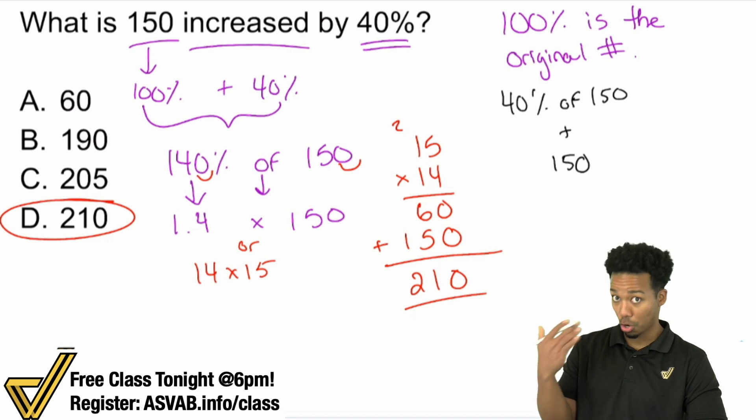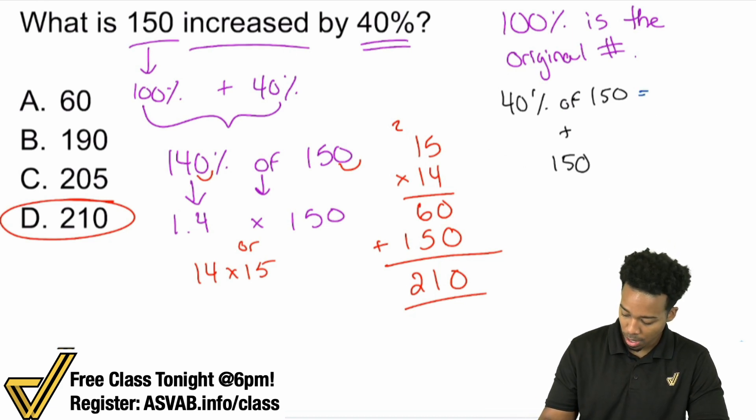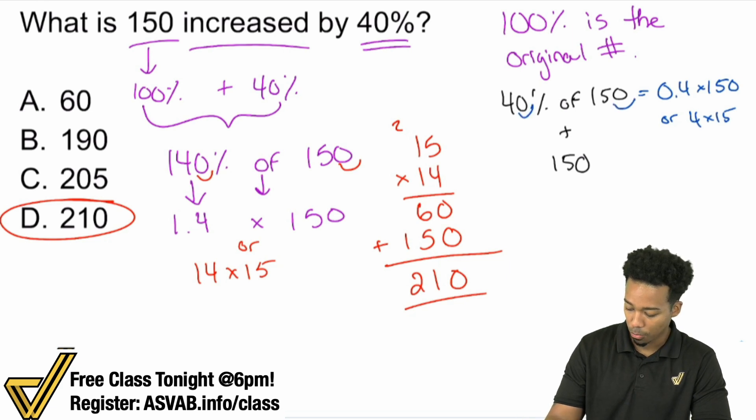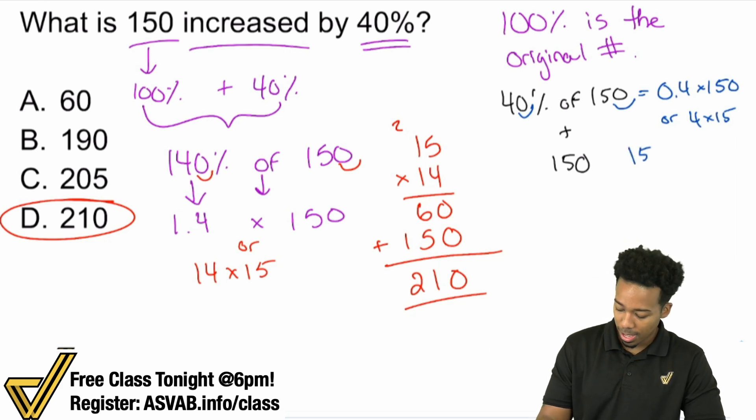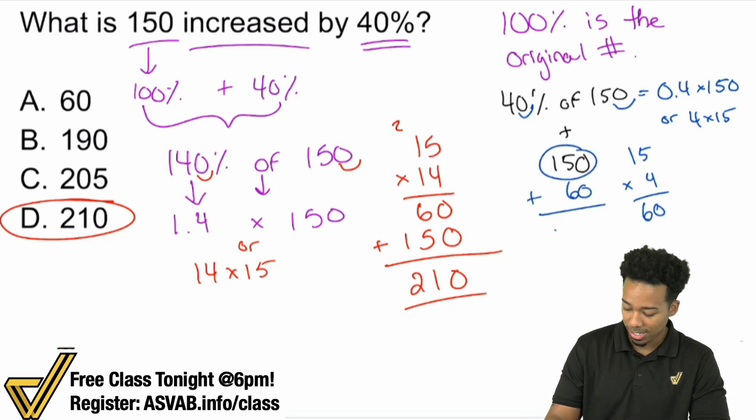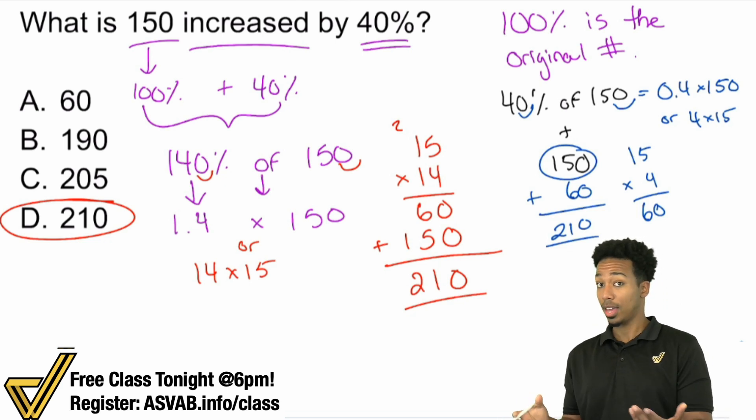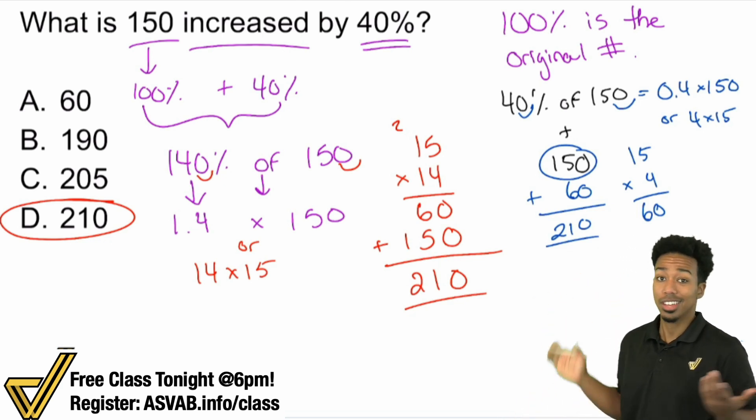But again, I'm not done. Don't leave yet. I need to show you the other way here. So if you wanted to do it this way, you would go ahead and just straight up calculate 40% of 150. So that would turn into 0.4 times 150. Or you can call that 4 times 15. Again, if you're just going to go and move one there and move one there, you can turn it into 4 times 15. That's fine. But long story short, if you do 15 times 4, what's going to happen is you'll get 60. And then if you take that 150 and you add the 60, you get 210. So either way, either way, you can still get that 210.